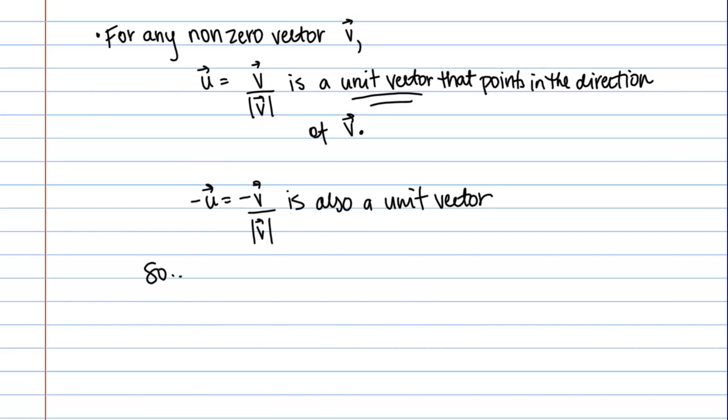Then, what we can say, kind of as a summary, is that plus or minus v over magnitude of v are unit vectors parallel to the original vector v that point in opposite directions.